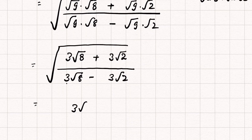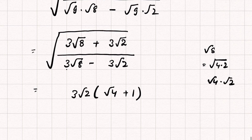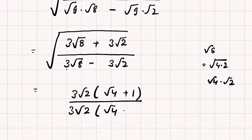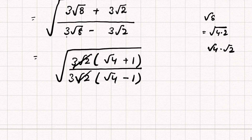We can take 3√2 as common from both numerator and denominator. Note that √8 = √(4×2) = √4 × √2 = 2√2. So the numerator becomes 3√2 × (√4 + 1) and the denominator becomes 3√2 × (√4 − 1). The 3√2 terms cancel out, leaving √4 + 1 over √4 − 1, under square root.